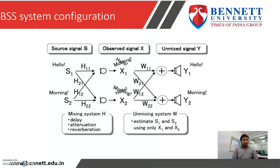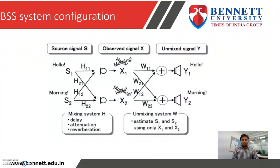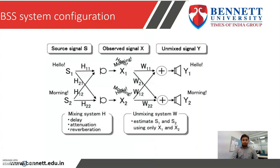Now we understand the BSS system configuration. In this system, there are source signals represented by s, and the mixing system represented by h. After mixing the source signals, we get the observed signal, which is represented by x. For finding the unmixed signal, we use the unmixing system w. This is the basic configuration of the BSS system. Blind source separation is an approach for estimating the source signals using only the information of mixed signals observed at each input channel.